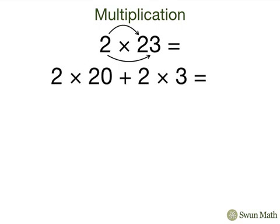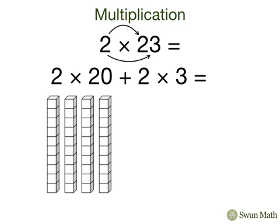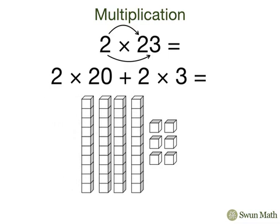We'll have 2 times 20 plus 2 times 3. 2 times 20 gives us 40, and 2 times 3 is 6. When we add them together, we get a total of 46.